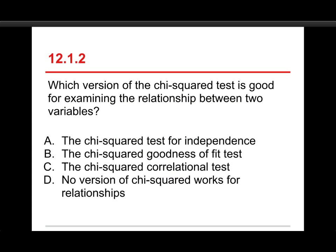Question number two. Which version of the chi-squared test is good for examining the relationship between two variables? The choices are the chi-squared test for independence, the chi-squared goodness of fit test, the chi-squared correlational test, or no version of chi-squared works for relationships. The answer is A, the chi-squared test for independence.